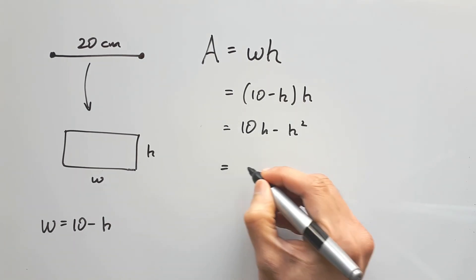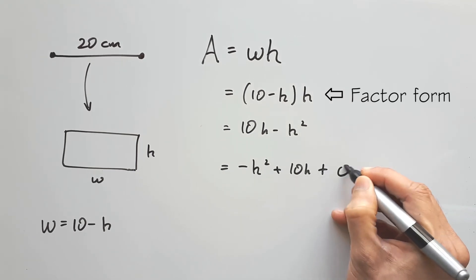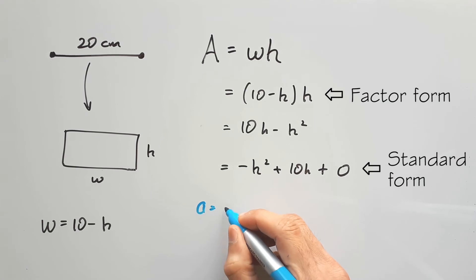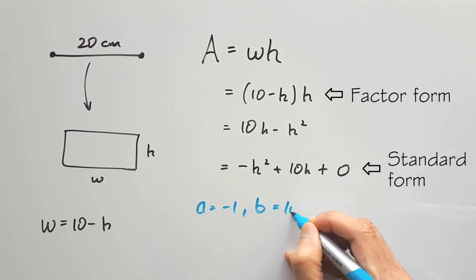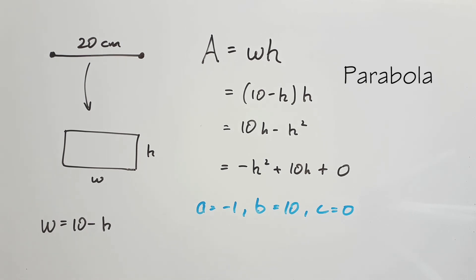We're going to draw a graph, so if you're not comfortable with the factor form, you might want to arrange it into the standard form with coefficients negative 1, 10, and 0. A quadratic equation, or in Latin, better known as the square equation, forms a curvy shape when drawn on a graph. This shape is known as a parabola.